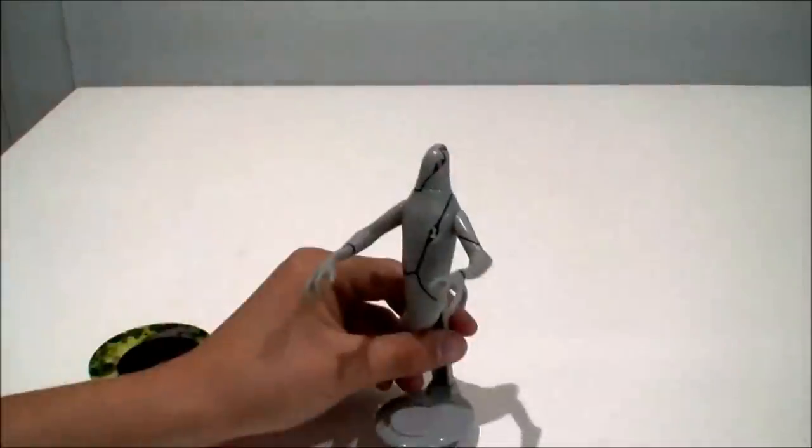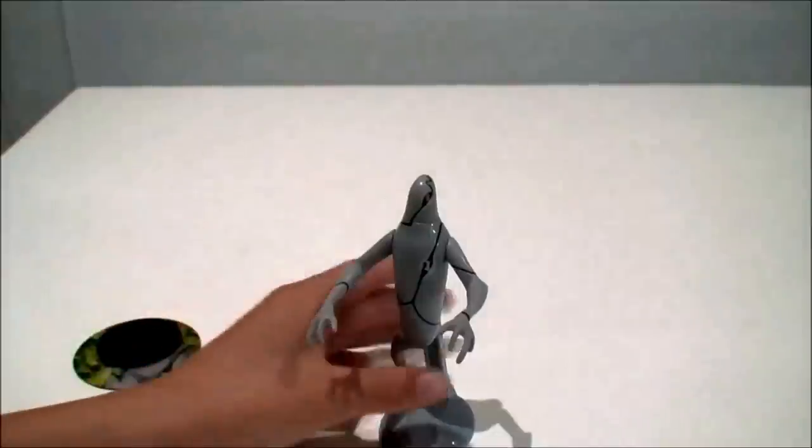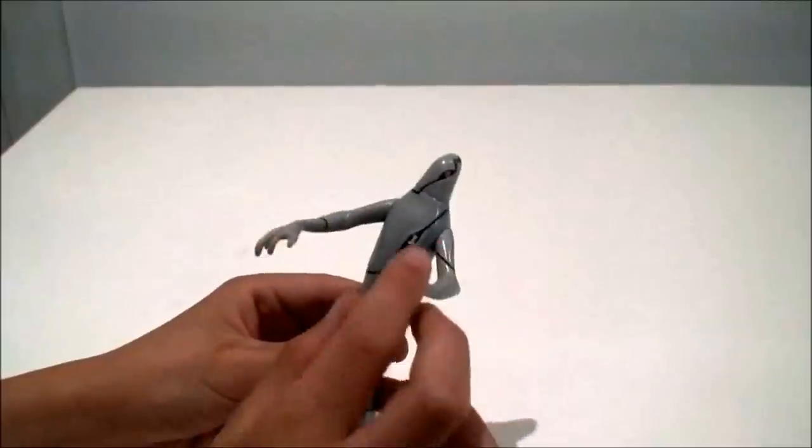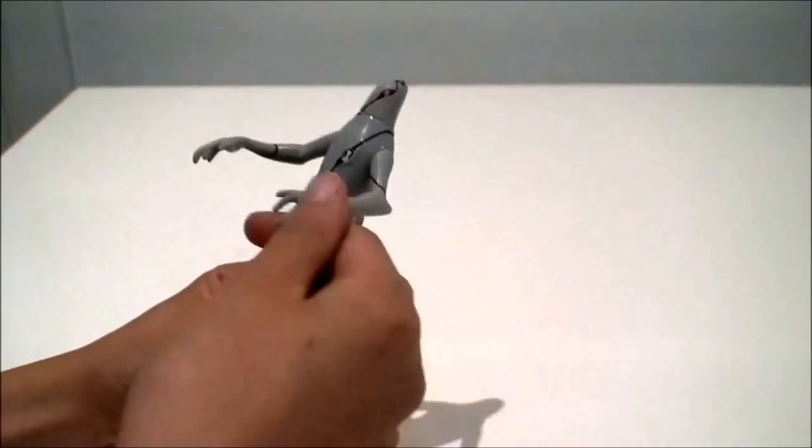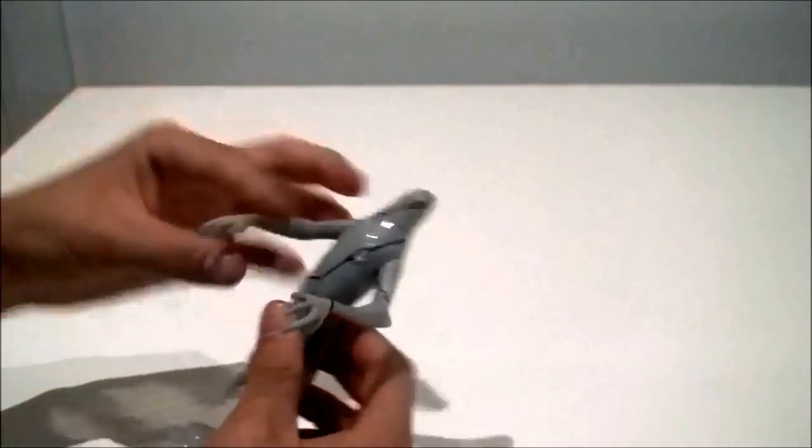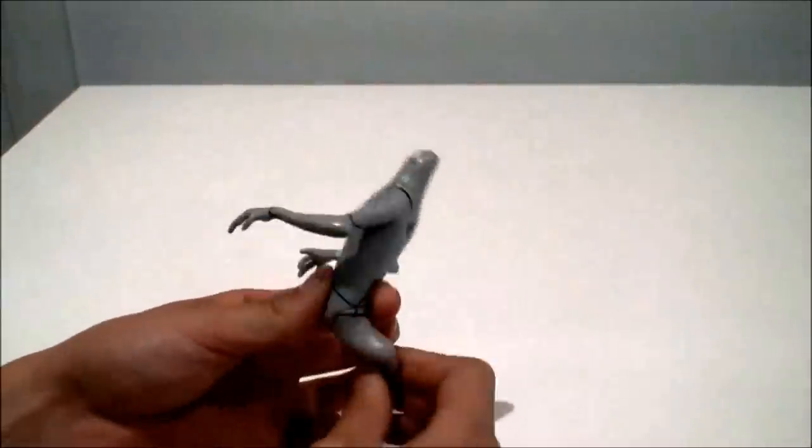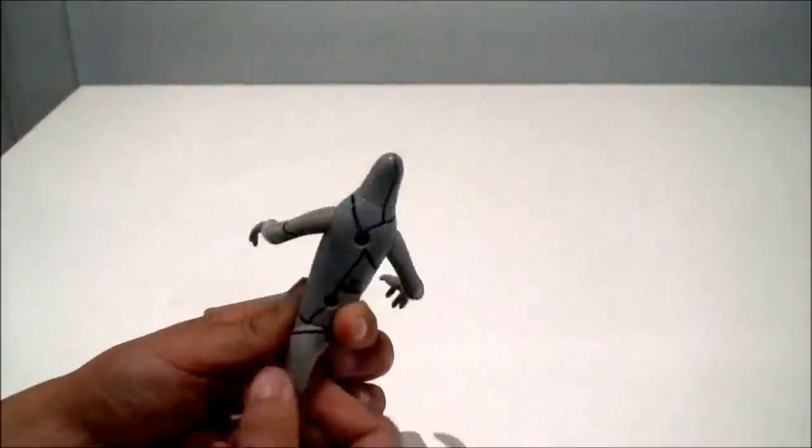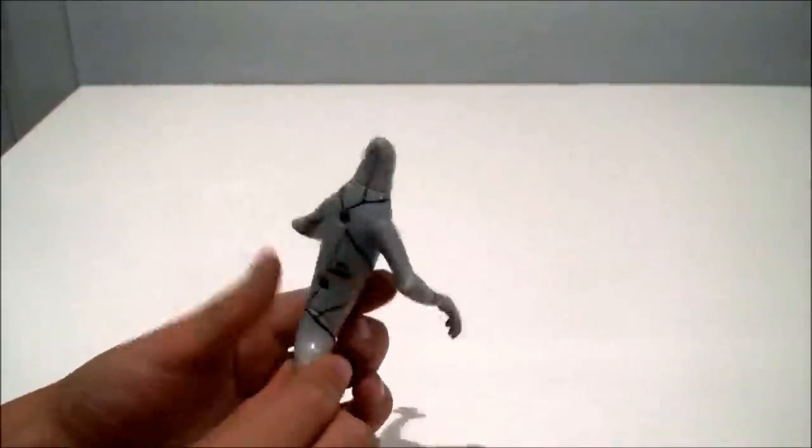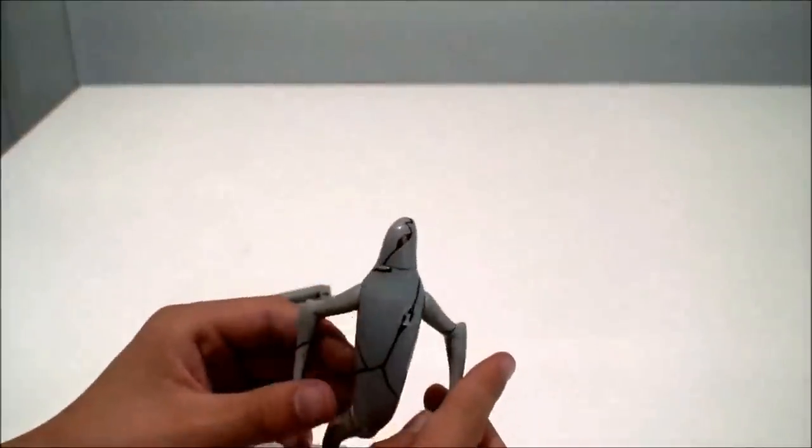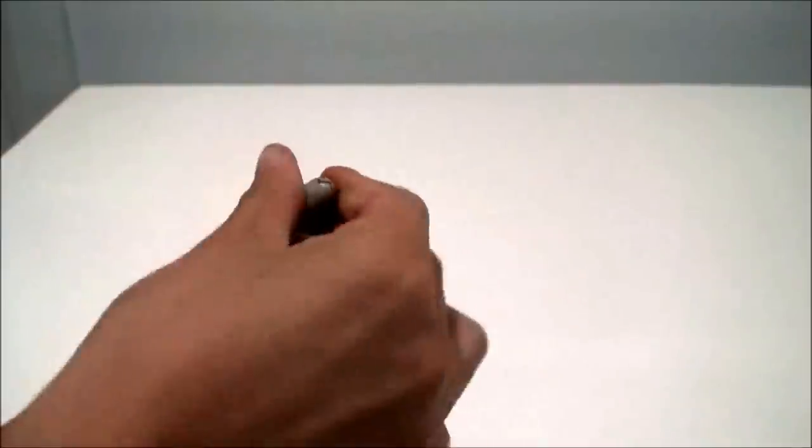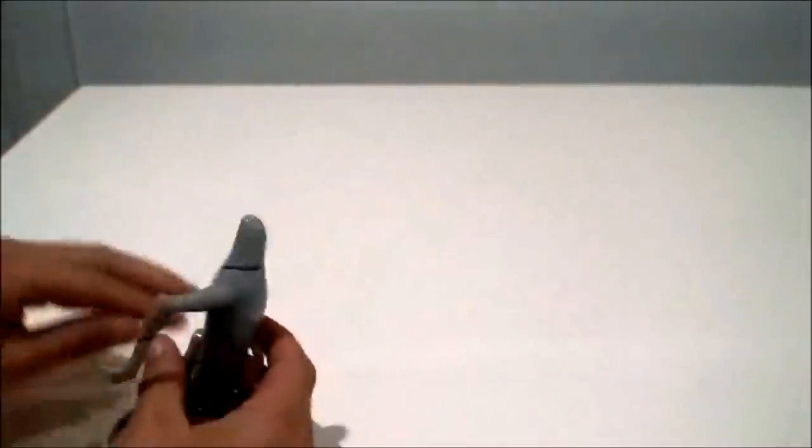But, oh yeah, and his accessory also has this Omnitrix symbol. Next, we're gonna look at the articulation on this figure. So the articulation, his arms can move here, his tail can move 360 here. Here's the tail moving, that's the basic look. Here is his head can turn as well.